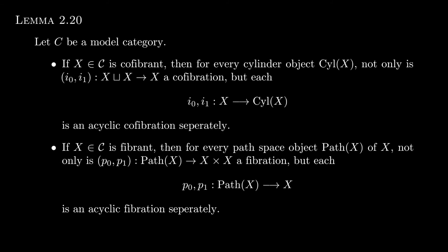So we can always find some cylinder object for x, an object of a category that factors as an acyclic co-fibration followed by a weak equivalence, and dually some path space object that is a weak equivalence followed by an acyclic fibration.